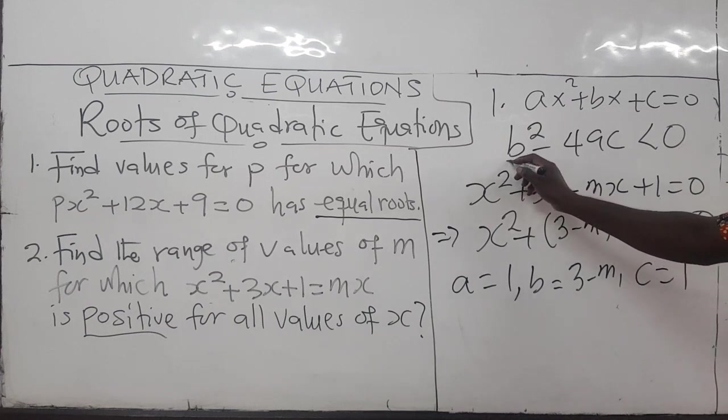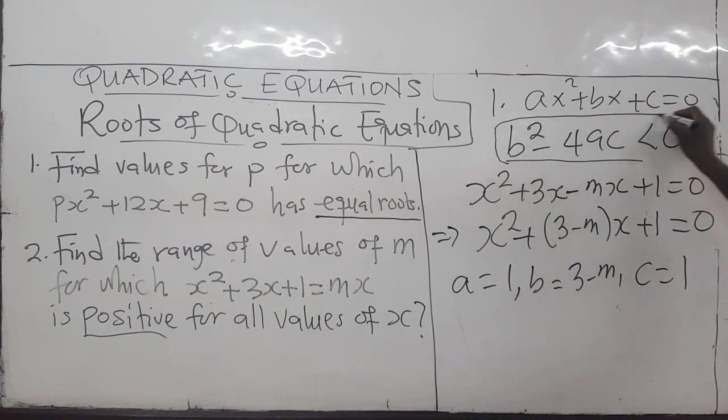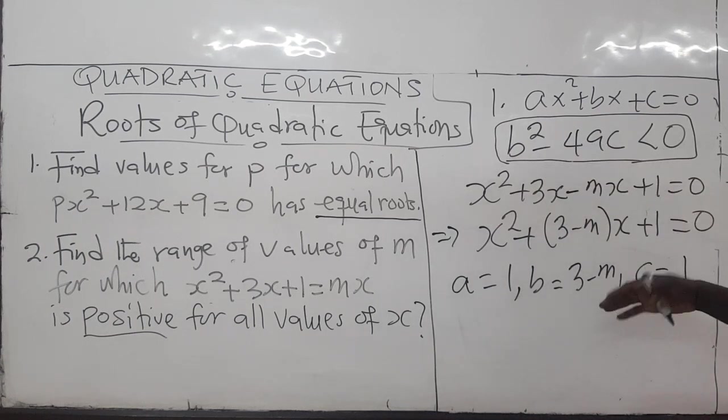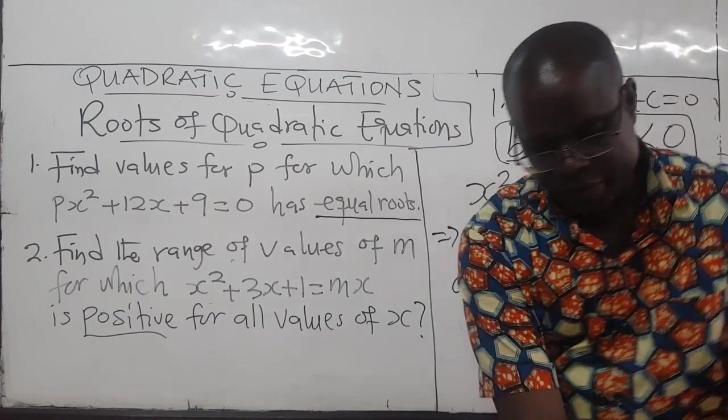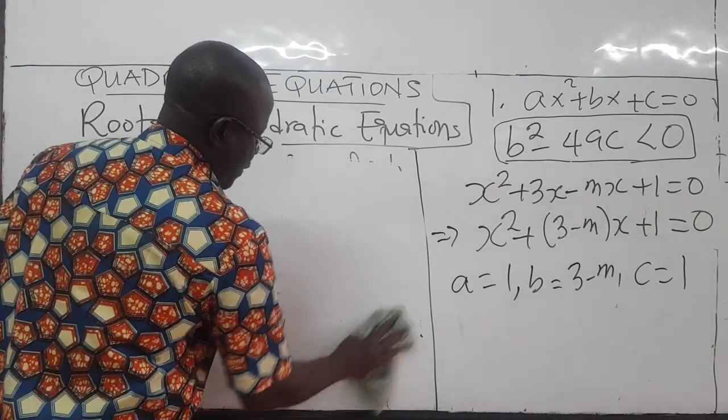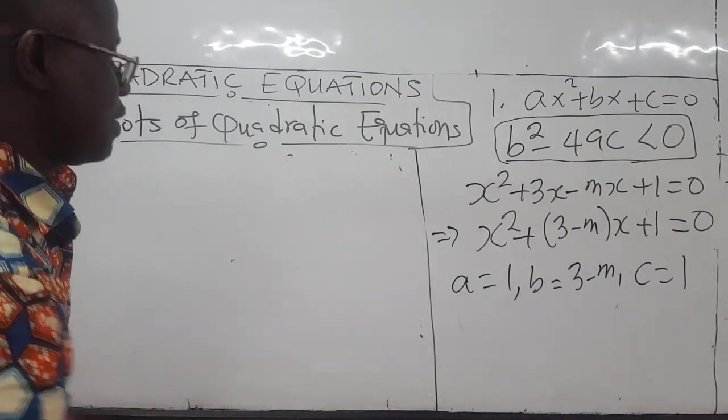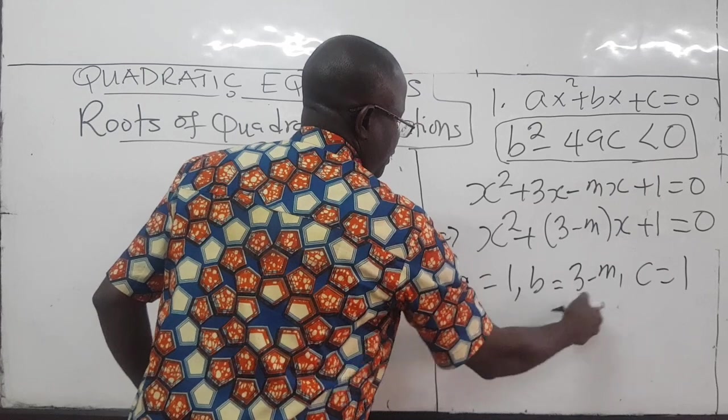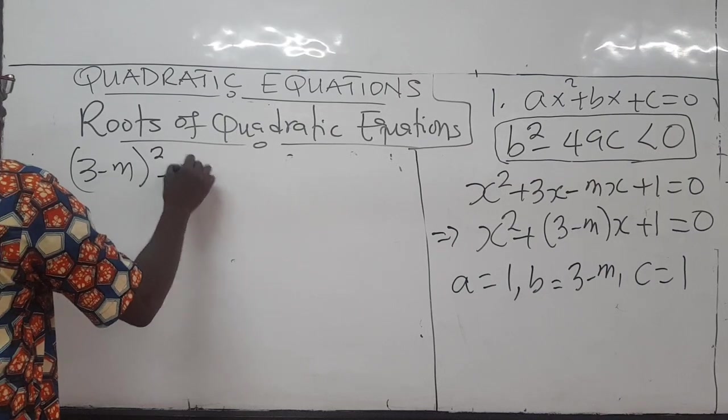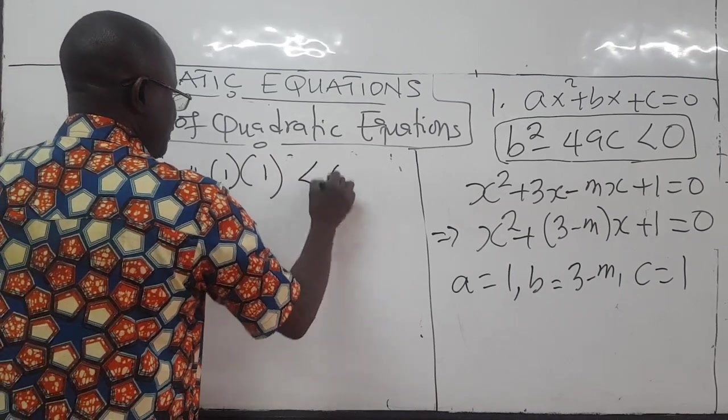Then we plug it into this expression because for the equation to be positive, we require that B squared minus 4AC has to be less than zero. So we put all this over here and then solve the quadratic inequality. So B is this quantity 3 minus M. So we have 3 minus M squared minus 4. A is 1. C is 1. This has to be less than zero.